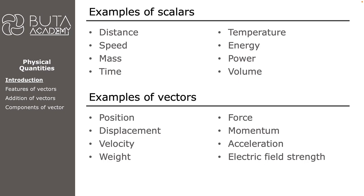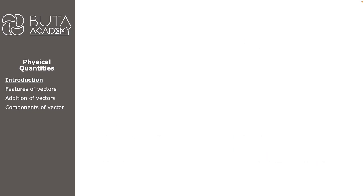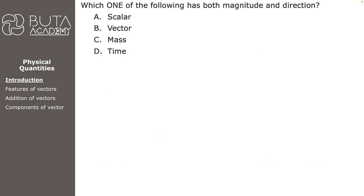Speaking about exam questions, let's see what kind of questions we can expect. Question one: which one of the following has both magnitude and direction? A — scalar, B — vector, C — mass, D — time. This one must be quite easy to answer as the question is essentially the definition of a vector, so the answer is B.